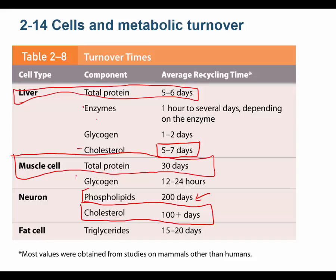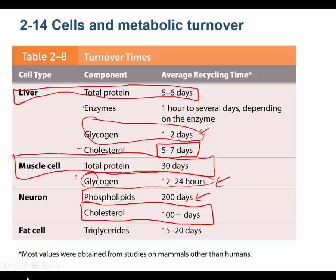Let's look at glycogen. The glycogen in the liver lasts a couple of days, depending on metabolic activity — whether you're running a marathon or sitting watching a game eating potato chips. The turnover time in the liver is one to two days. In the muscle cell, glycogen might last a day, but it gets turned over more quickly because muscle cells are contracting. Muscle cells burn that glycogen to make ATP.